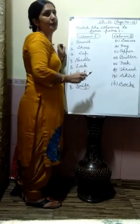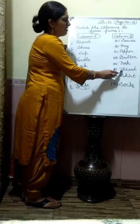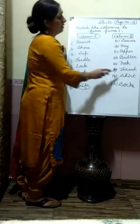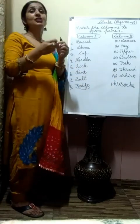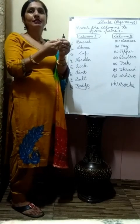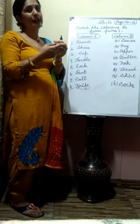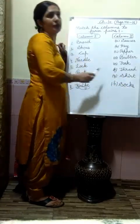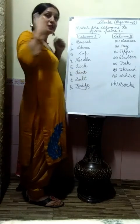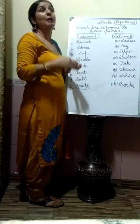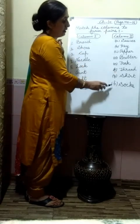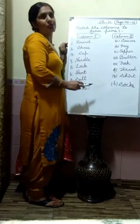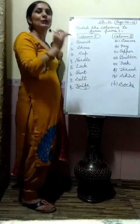Sixth is thread — T-H-R-E-A-D — thread. Thread means dhaga, which your mother puts through a needle for stitching. Seventh is shirt — S-H-I-R-T — shirt, the clothing you wear. Eighth is socks — S-O-C-K-S — socks. Everybody knows socks are worn with shoes.